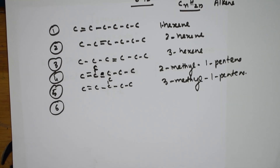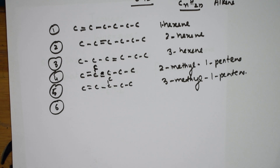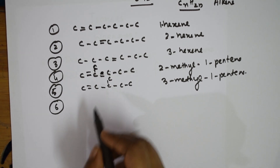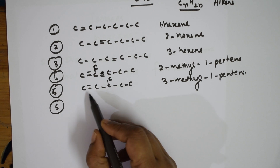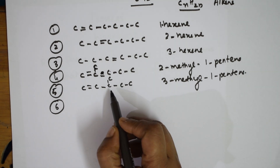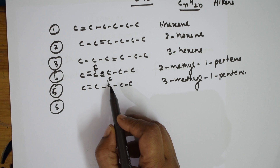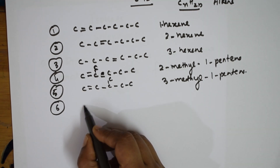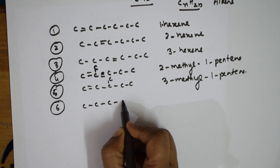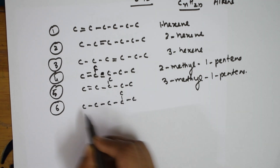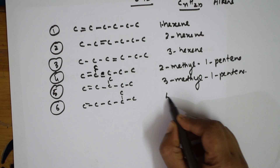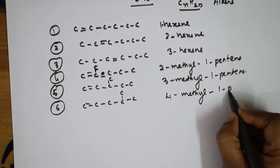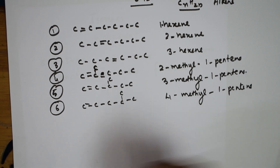The sixth one — six more left. From this methyl group position, I'm going to shift it further along, with the double bond staying at position one: 1, 2, 3, 4. This becomes 4-methyl-1-pentene. Try to make all the 1-pentene combinations first, then come back to the 2-pentene ones.